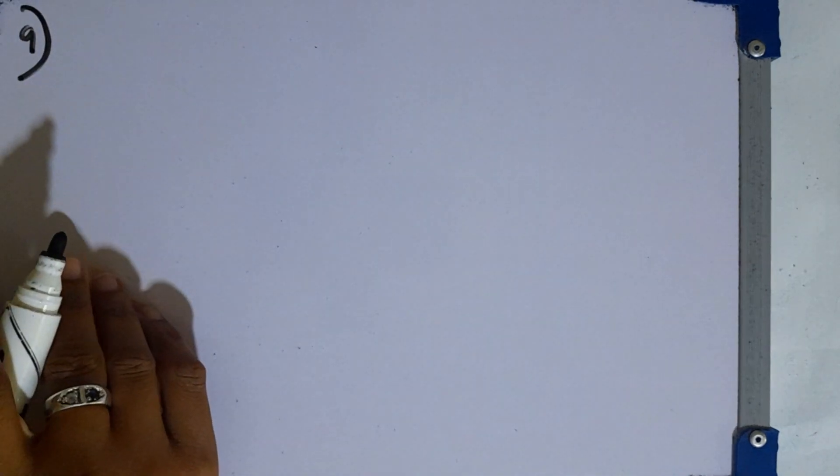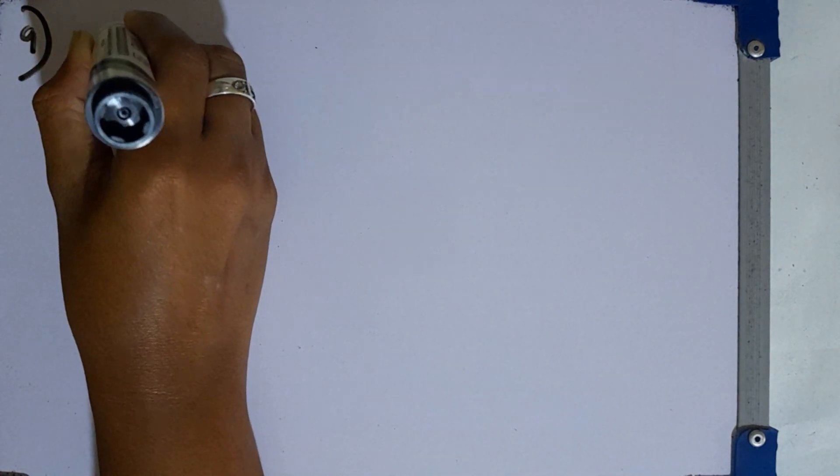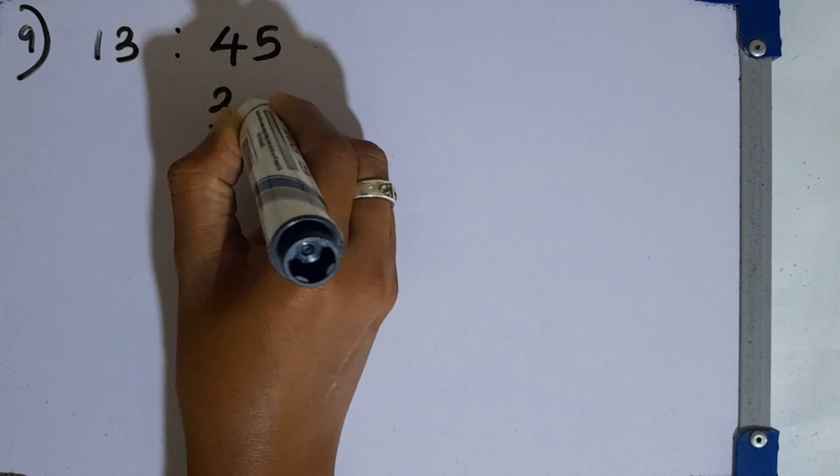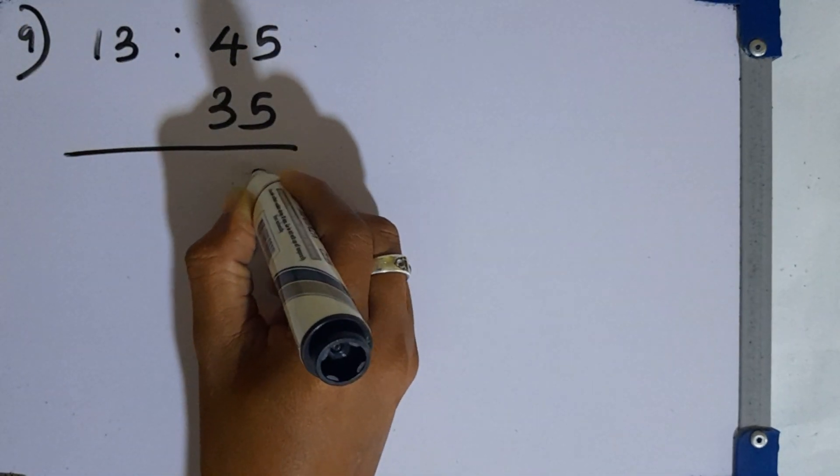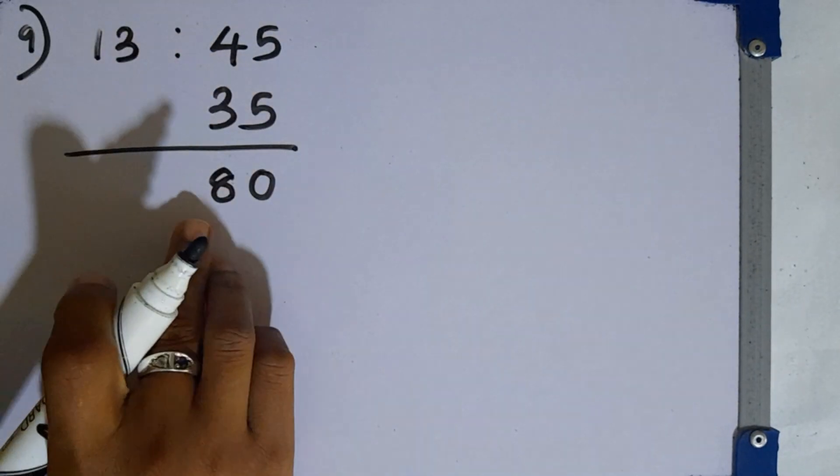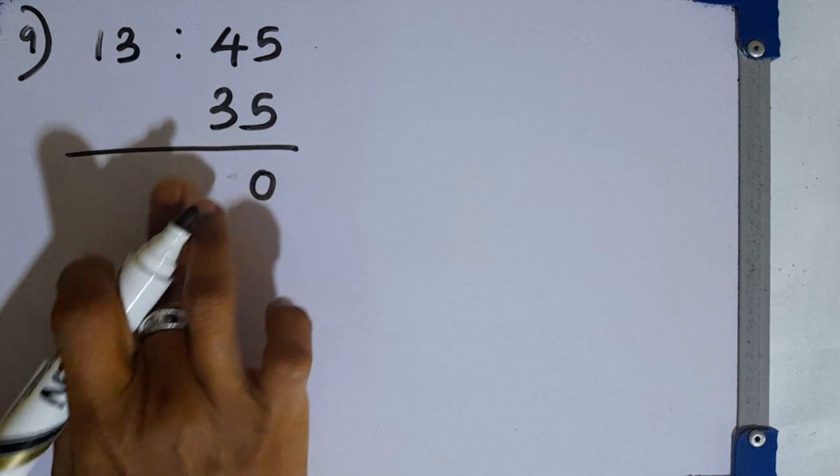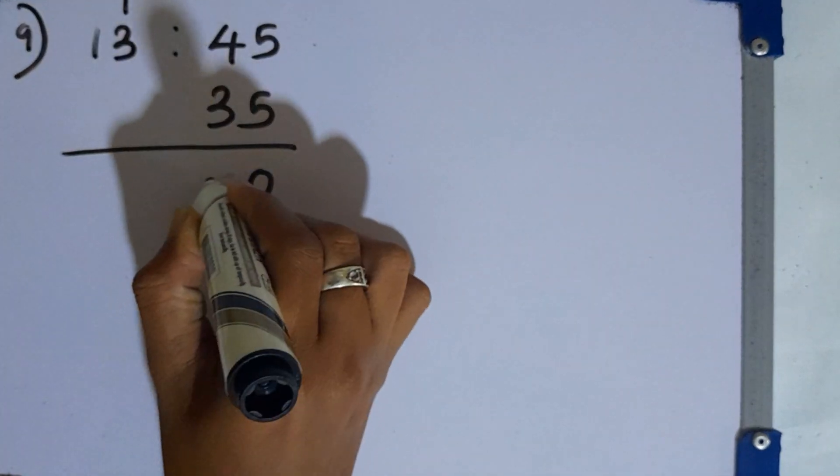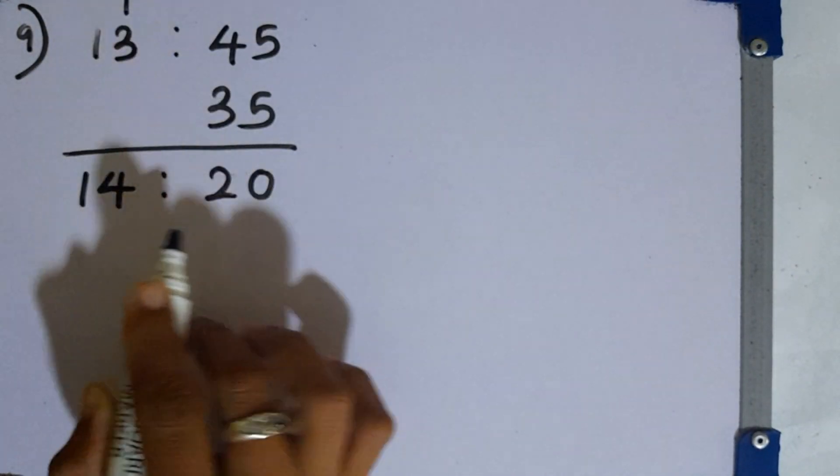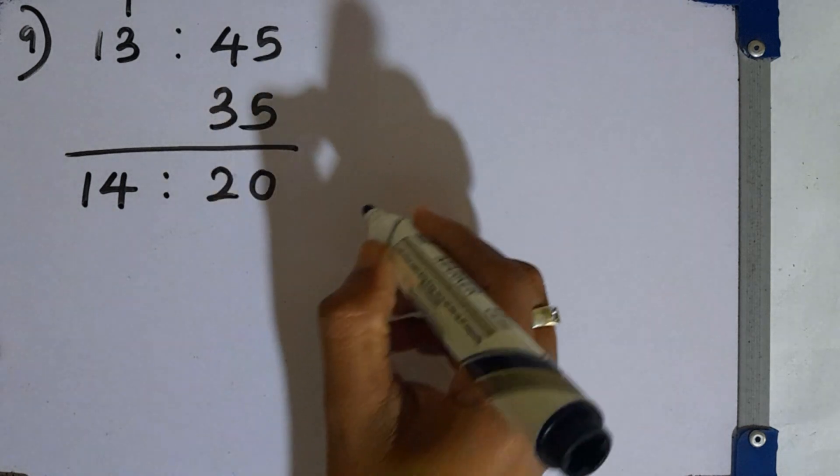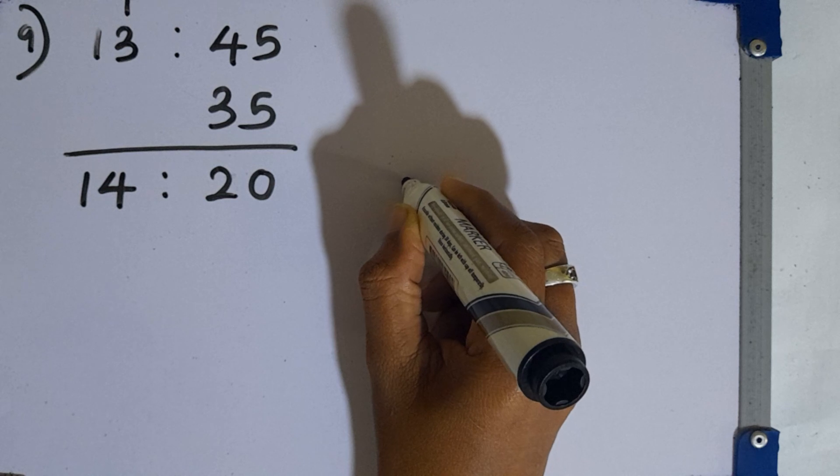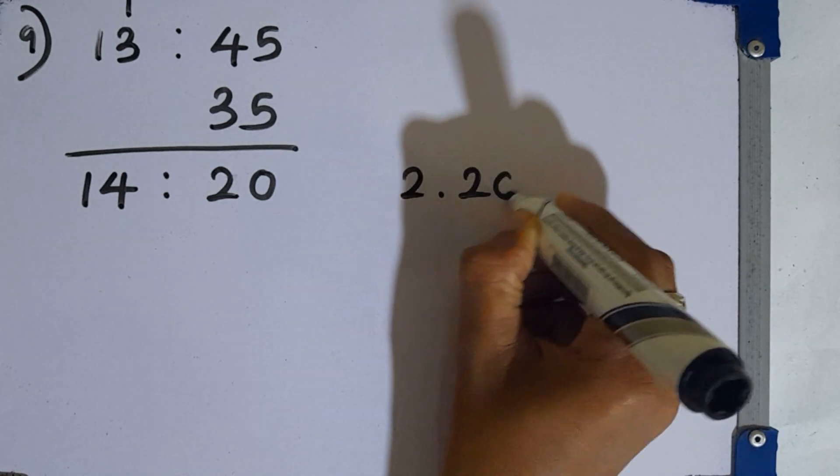In standard form I can take 1:45 as 13 hours 45 minutes. Then 35 minutes should be added to this minute side. We get 80 here. We can't keep 80 here. So we have to take 60 minutes into the hours side. Then here remaining is 20 minutes. Then this 14 hours 20 minutes. Or in local time you can express it as 2:20 pm.